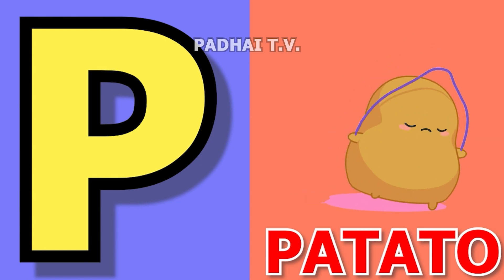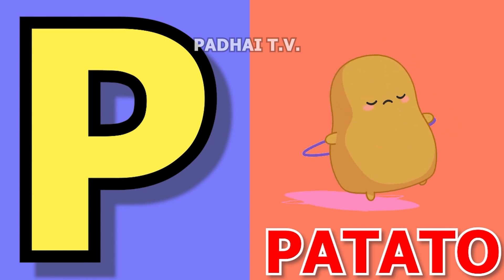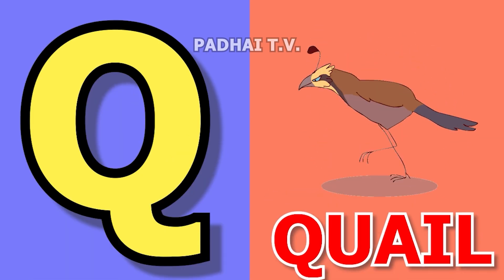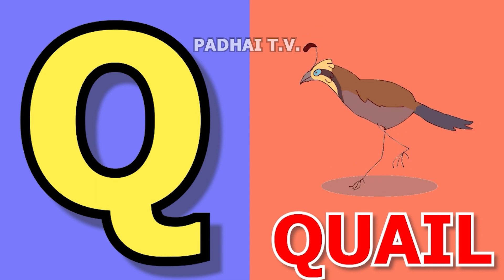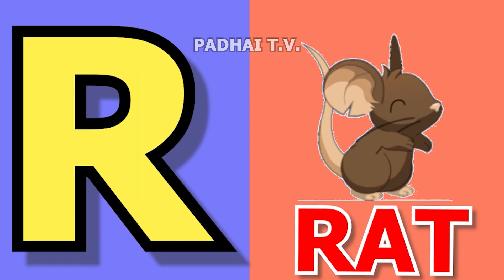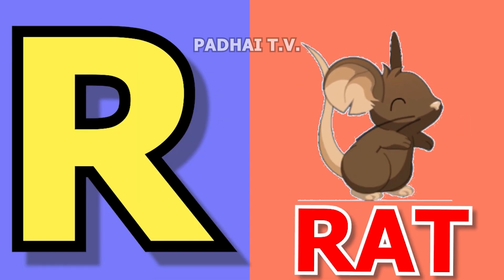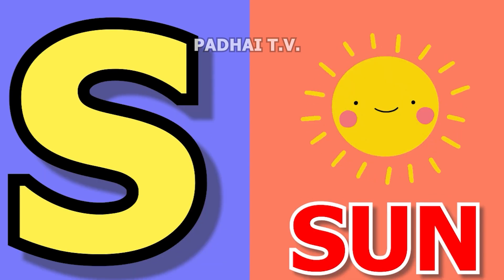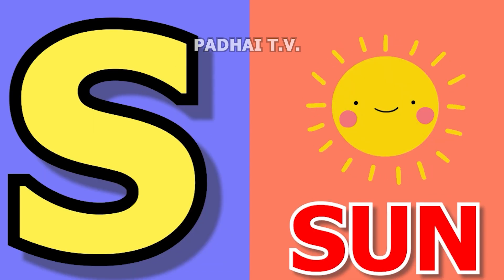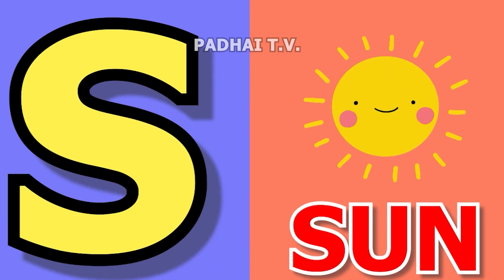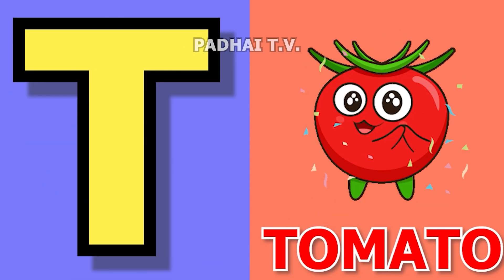P for potato, potato means aloo. Q for quill, quill means quill. R for rat, rat means chuha. S for sun, sun means surya.